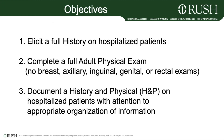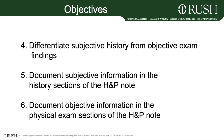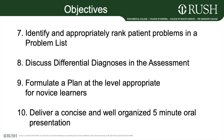This course has several objectives. By the end of the year, you will be able to perform a full history on a hospitalized patient and conduct a full adult physical exam. You'll document a history and physical with attention to appropriate organization. You'll differentiate between subjective and objective findings — subjective information goes in the history sections, while objective information is documented in the physical exam section of the H&P. You'll identify and rank patient problems into a problem list, develop a differential diagnosis, formulate a plan appropriate to your level of learning, and deliver a concise, well-organized five-minute presentation.